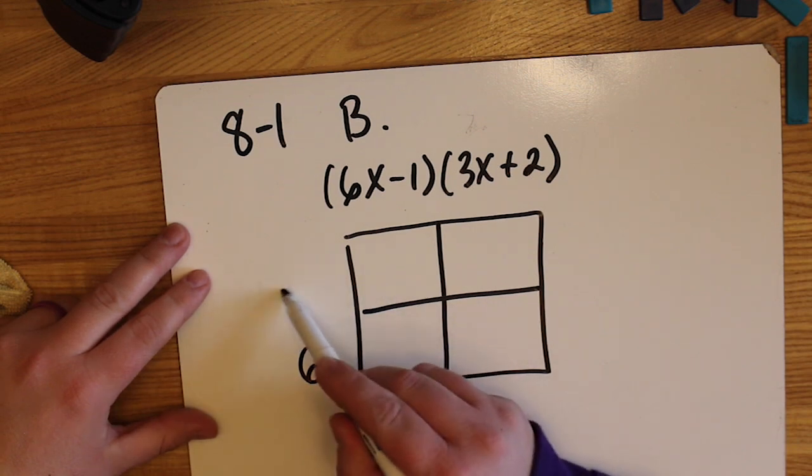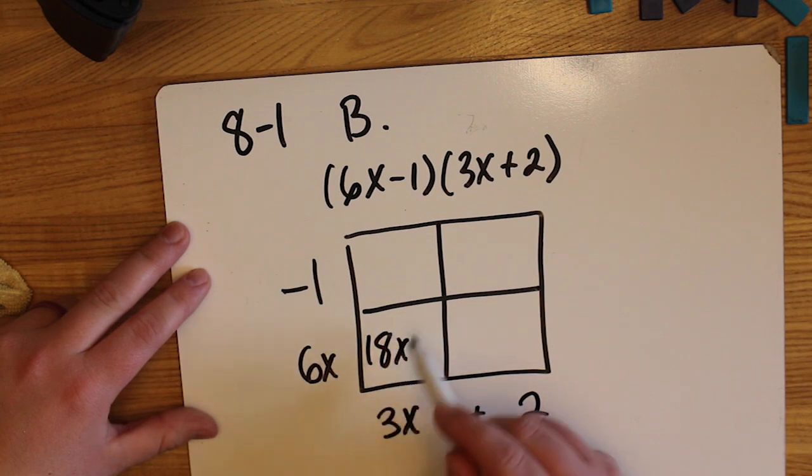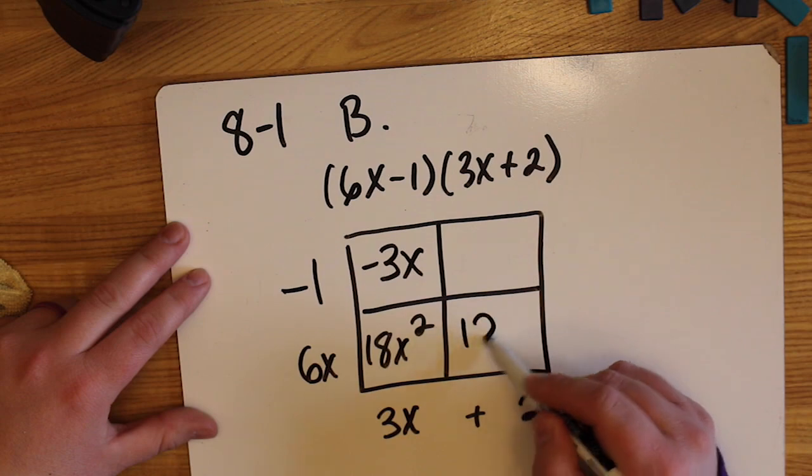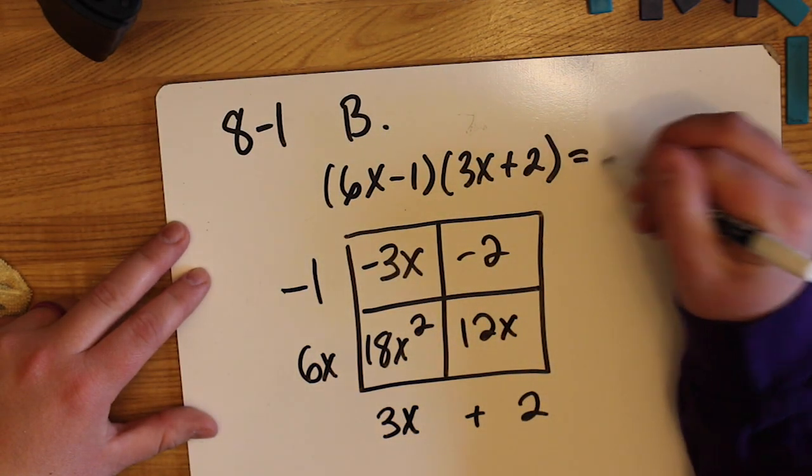In 8-1 Part B, we're asked to take this binomial and multiply them together. Again, this is a generic rectangle. I'm multiplying these terms together. I'm starting with the product. My result will be the sum.